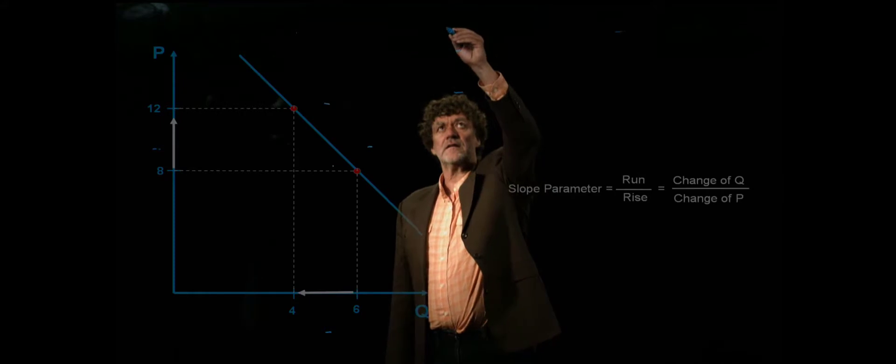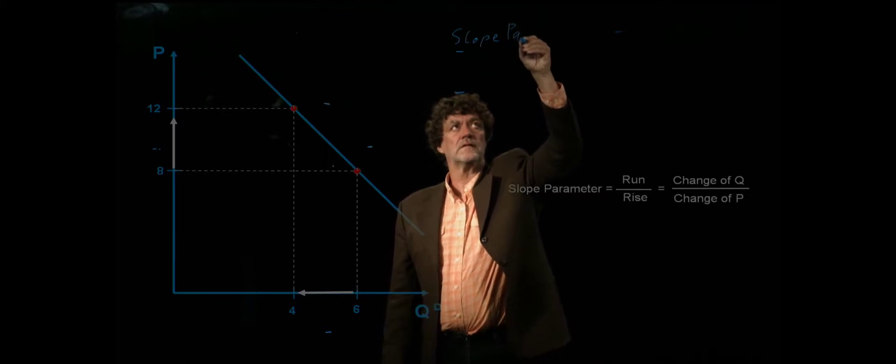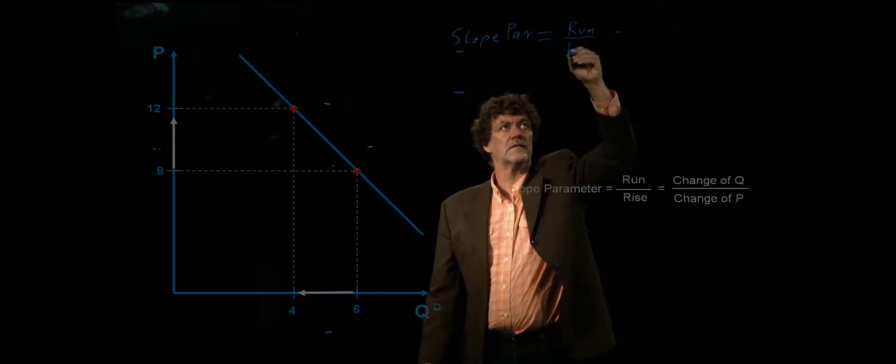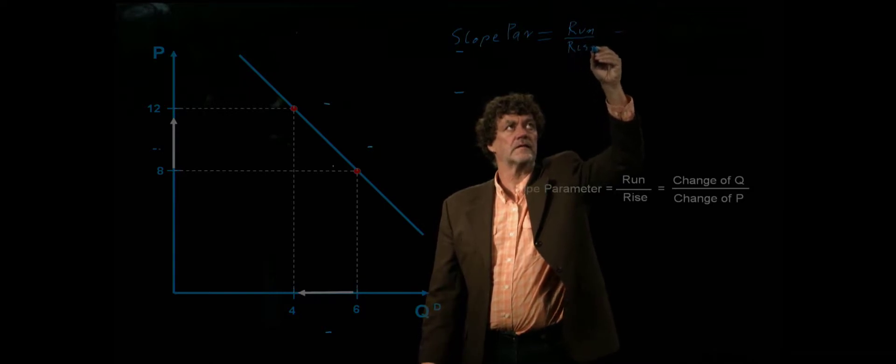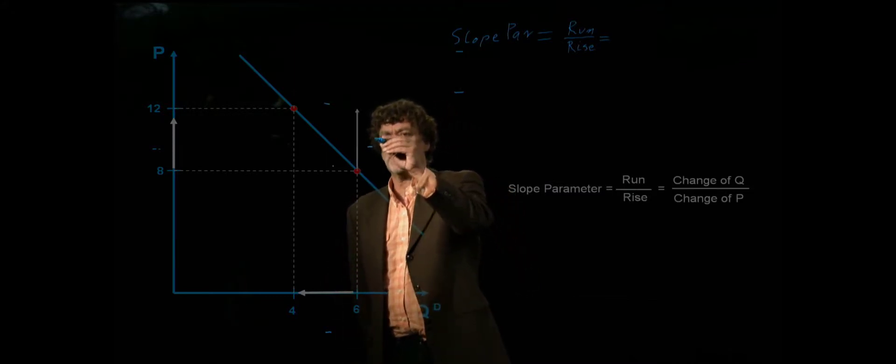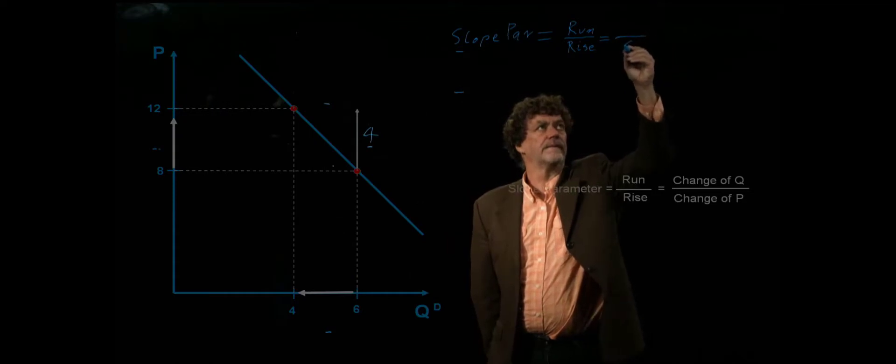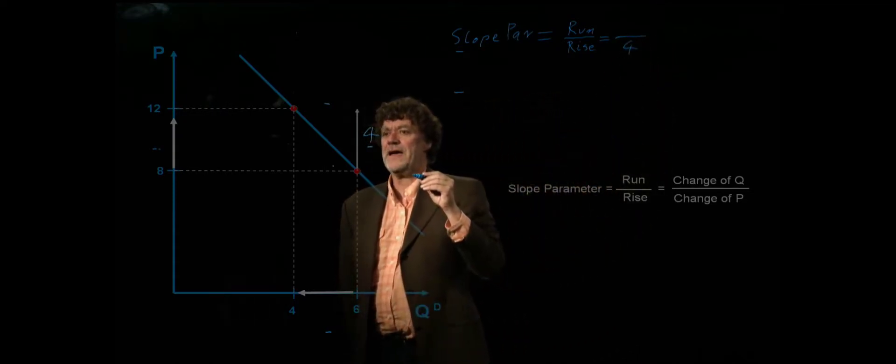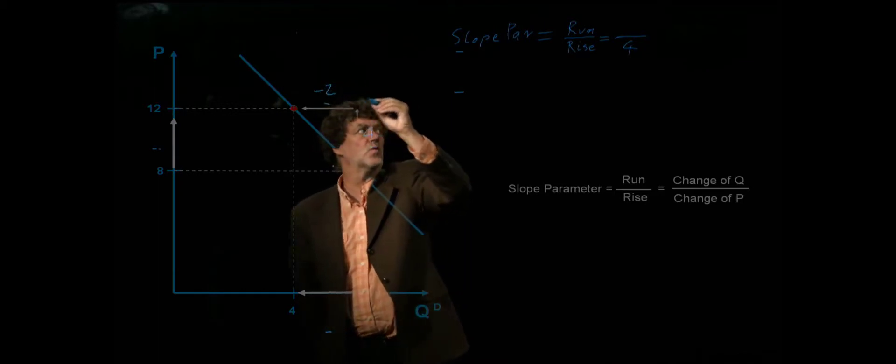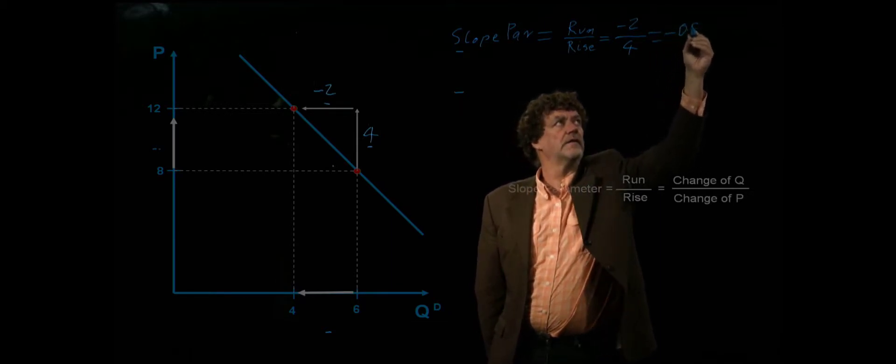So we calculate the slope parameter as run over rise. So what is the rise? The price actually increased from 8 to 12, so it increased by 4. And as a consequence the quantity demanded decreased from 6 to 4, which is a decrease by negative 2. So we have negative 2 over 4, which equals negative 0.5.